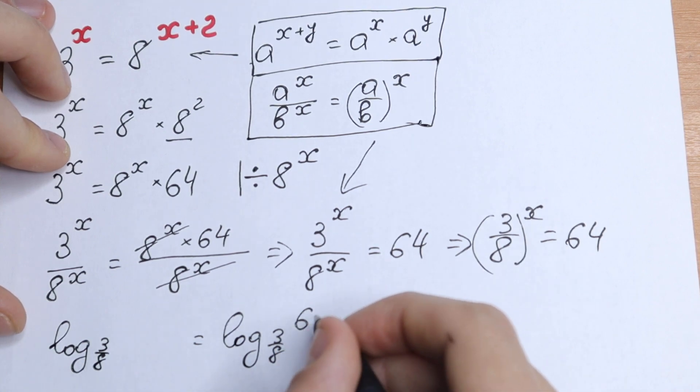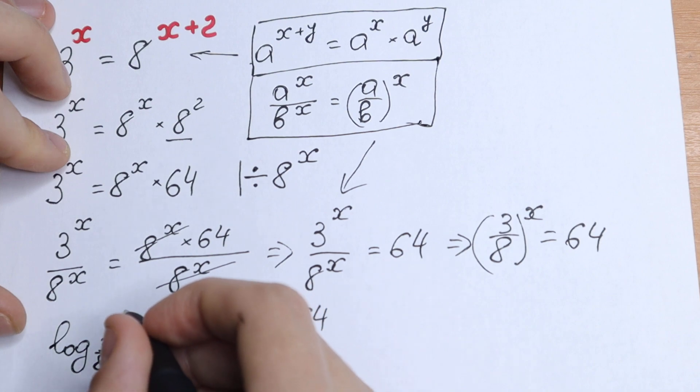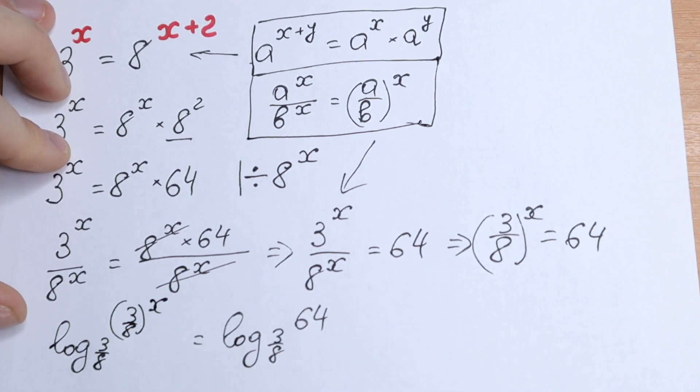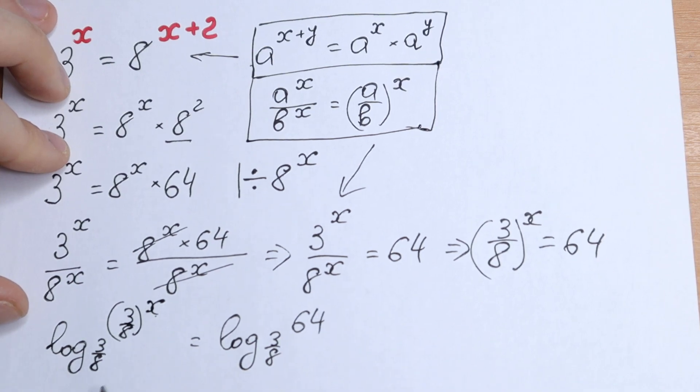From the right one, 64, and from the left one, 3 over 8 all raised to the power x on the left one. So take a log from both sides.